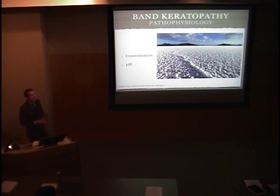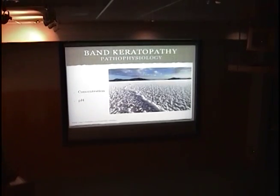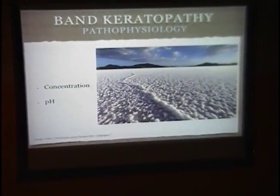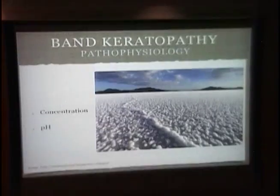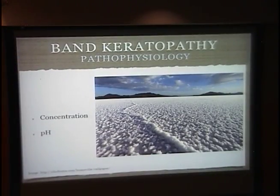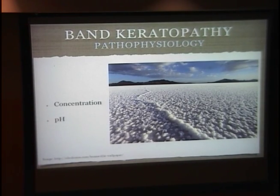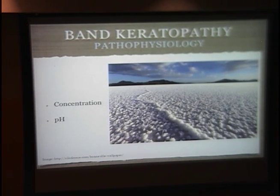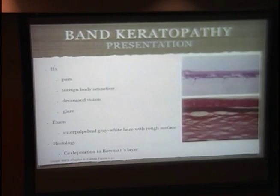If we think of pH, the interpalpebral zone actually loses a lot of carbon dioxide, which is an acid. So you have an increased baseline pH in this region, which increases the rate of calcium precipitation or decreases solubility. Further, in diseases like chronic inflammatory diseases of the eye, you can have a further increase in pH leading to calcium precipitation.